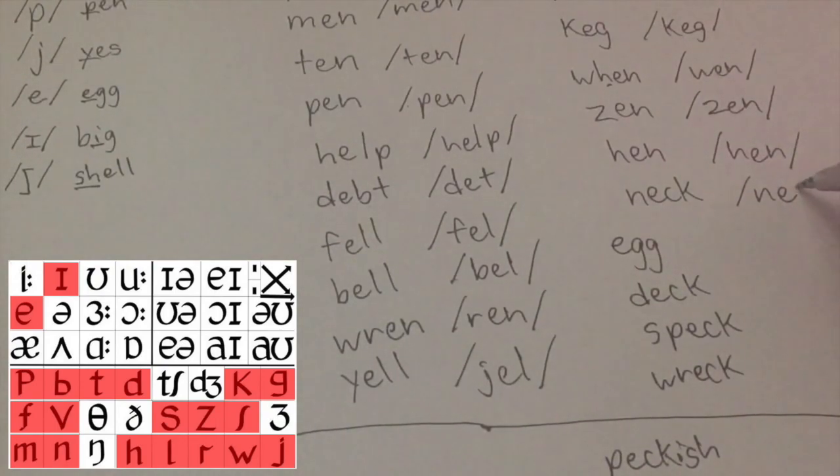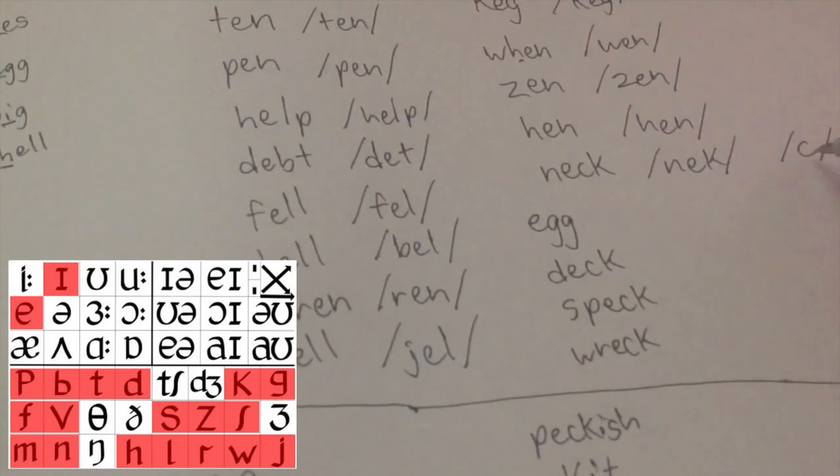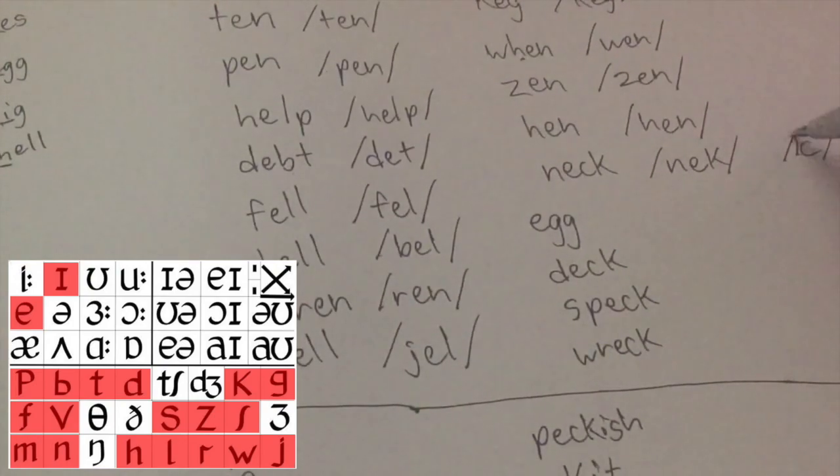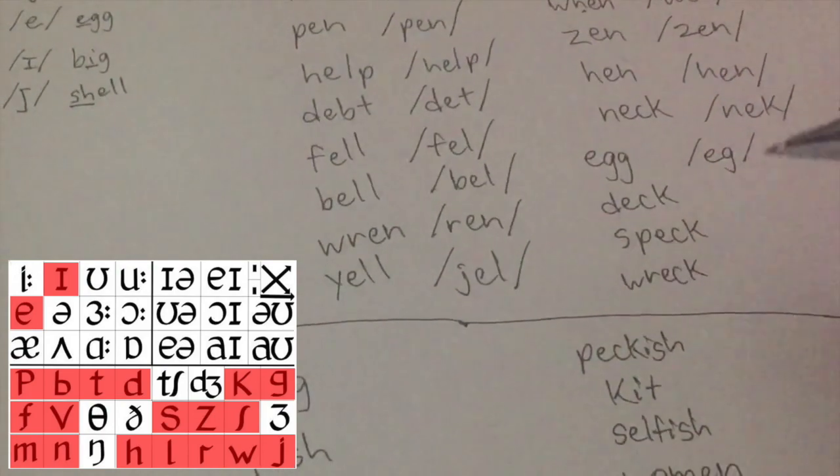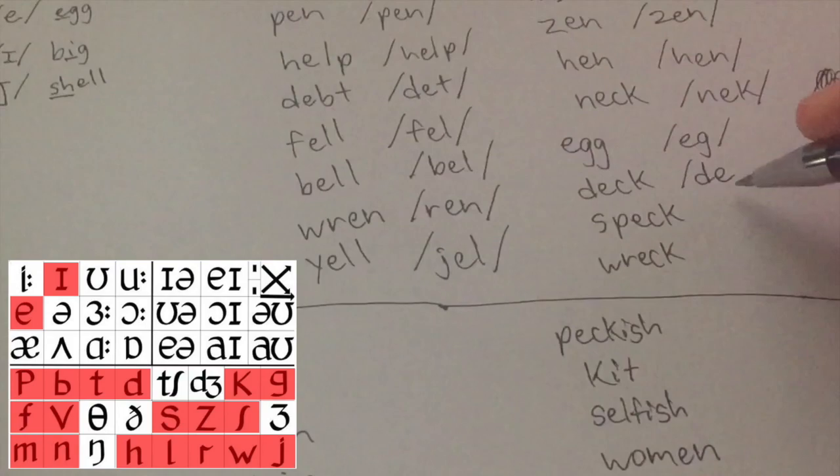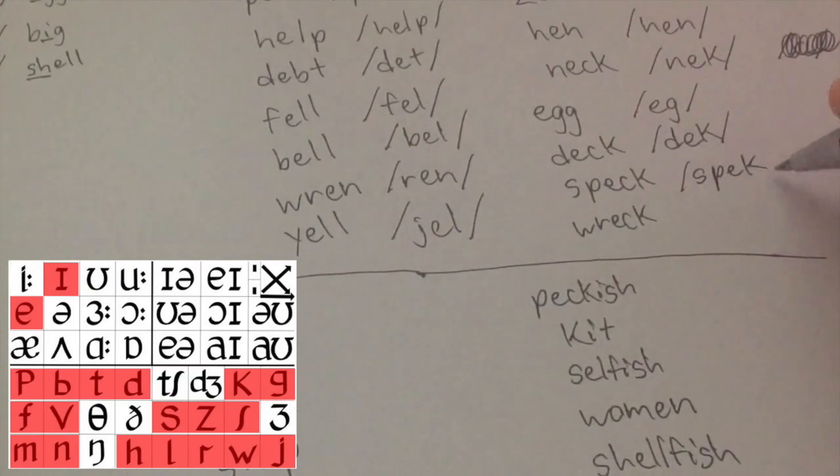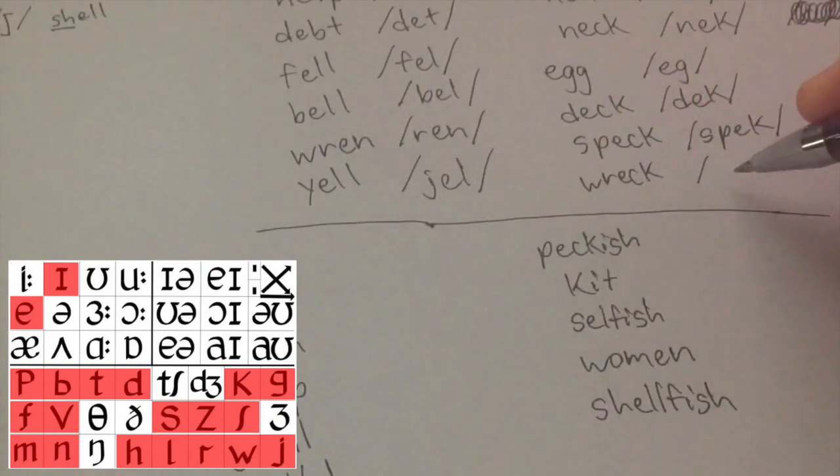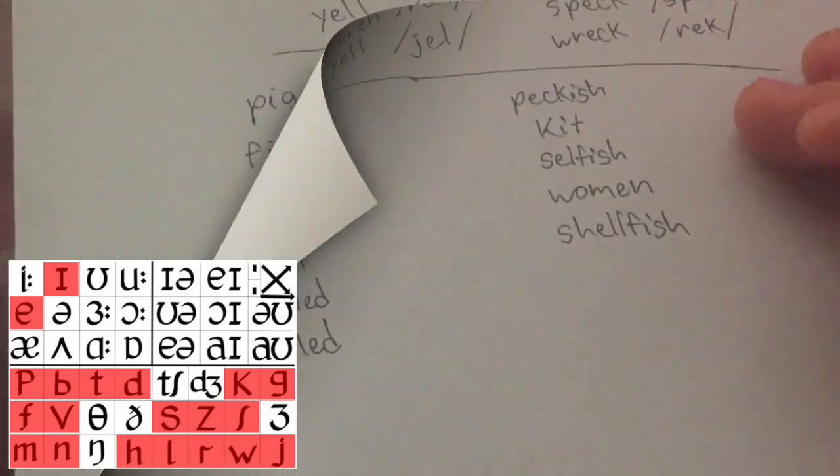You can only hear one of these sounds, a K. And which one is it? This one. This is not a phoneme in English, so don't write that ever. If you hear a K sound, it's always this. Egg. Don't double up. What's the next one? Deck. Looks like a K. And this one? Speck. And wreck. Good.